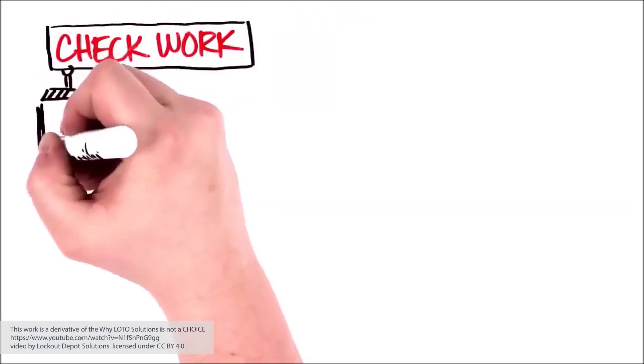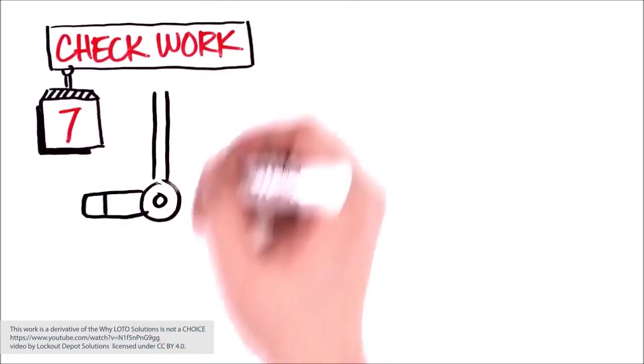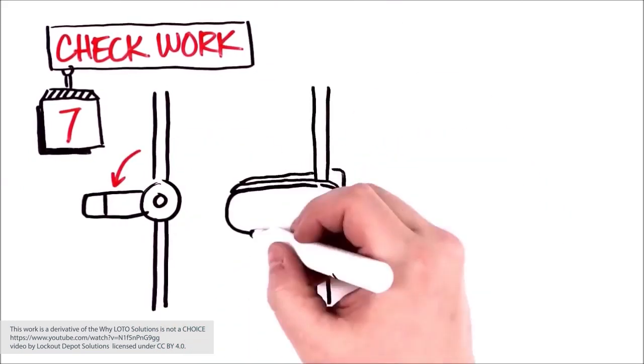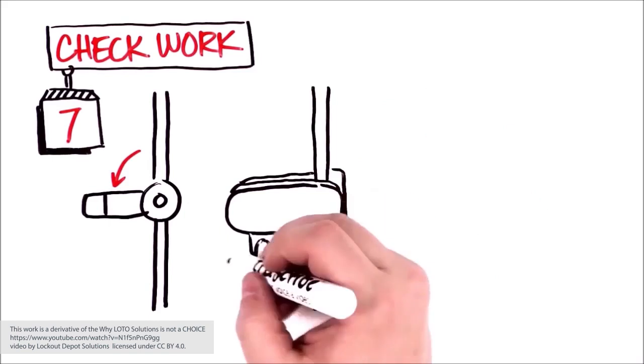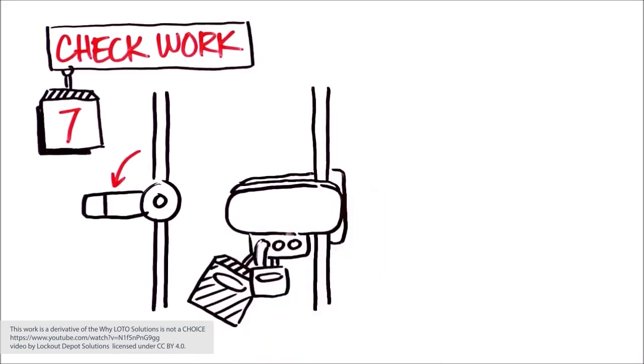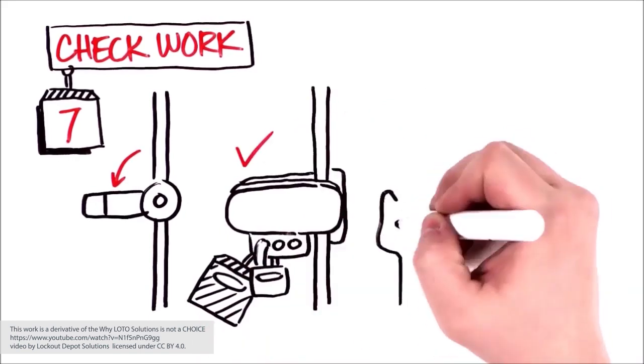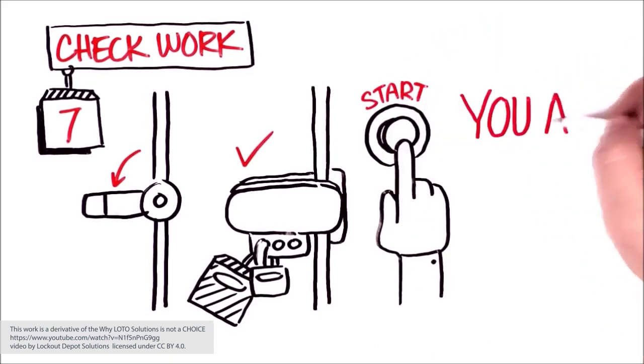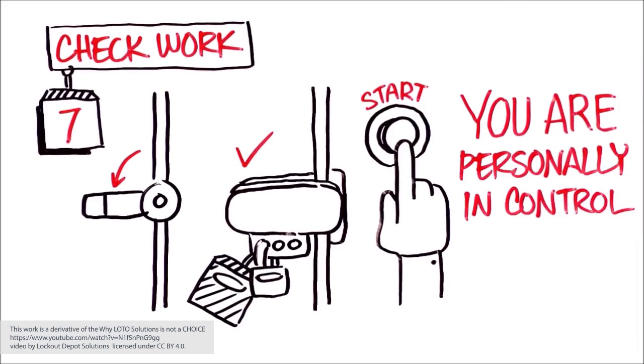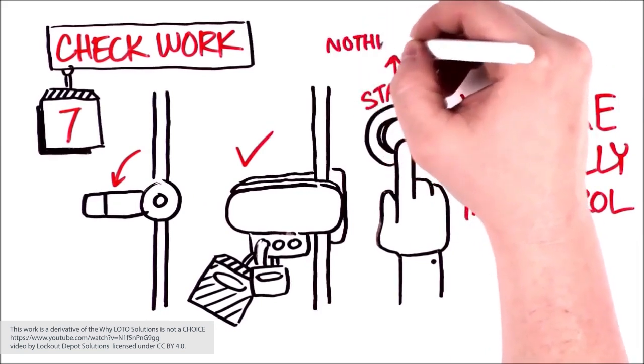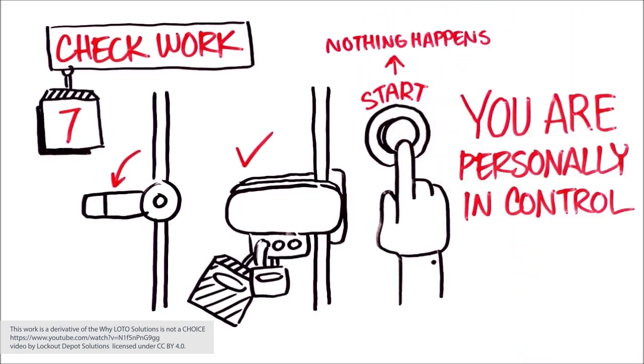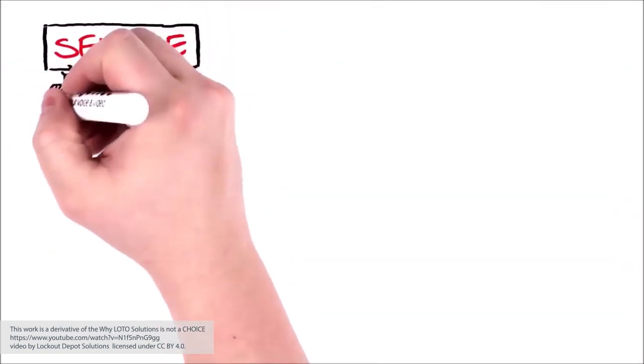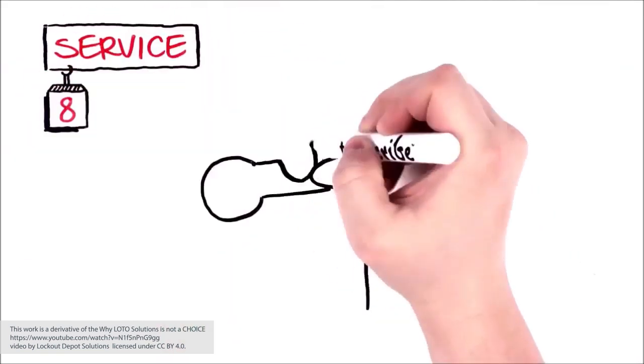Check your work. Try it out. Verify that each step so far has been done correctly. That means that after properly doing a LOTO procedure, you confirm that all energy sources are isolated with a physical barrier, you verify that the equipment will not restart, and you are personally in control of the hazardous energy. That ensures that equipment can't restart without your awareness.